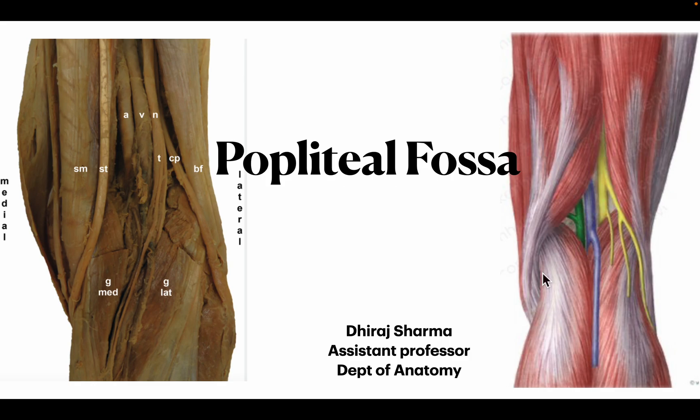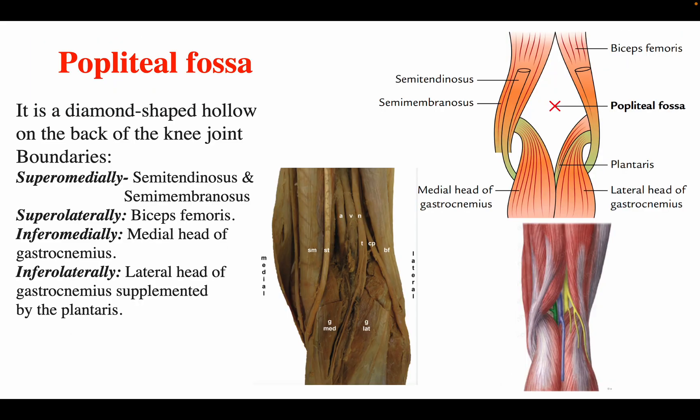Today's lecture is regarding the popliteal fossa, its boundaries and contents. The popliteal fossa is a diamond-shaped hollow or space that is present on the back of the knee joint. The popliteal fossa is homologous to the fossa of the upper limb, which is known as the cubital fossa.